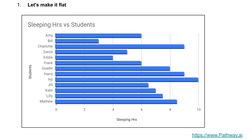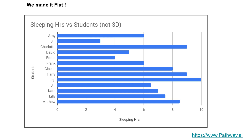Step number one is to make it flat. Most of you use 3D charts. I'm not a big fan of 3D charts — it adds noise. You see that additional line at the bottom of this bar chart? That's what I'm referring to. When you make it flat, that additional shadow element does not show up, and it's actually much cleaner.